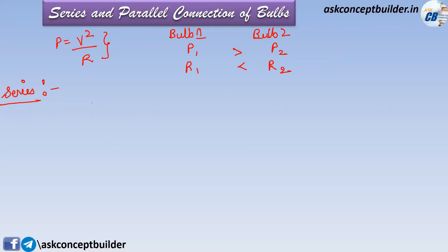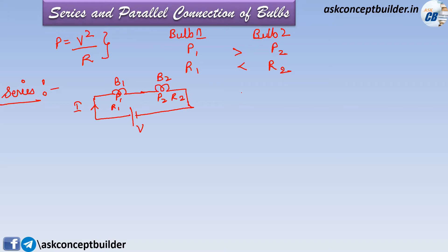In the series connection, the circuit has a cell of voltage V, with bulb 1 (power rating P1, resistance R1) and bulb 2 (power rating P2, resistance R2) connected in series. In series, the current I remains constant, so I equals the voltage applied divided by the sum of the resistances.